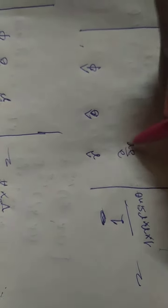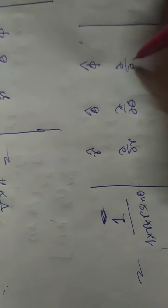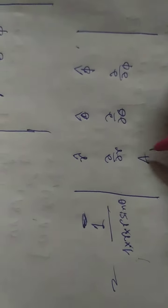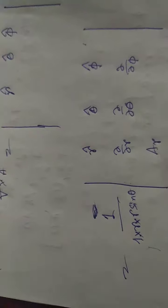Now write down the coefficient: 1 by r into r sine theta, multiply this. Similarly, you write here del del r, del del theta, del del phi. And here the vector quantity in radial direction: a r, a theta, and a phi.